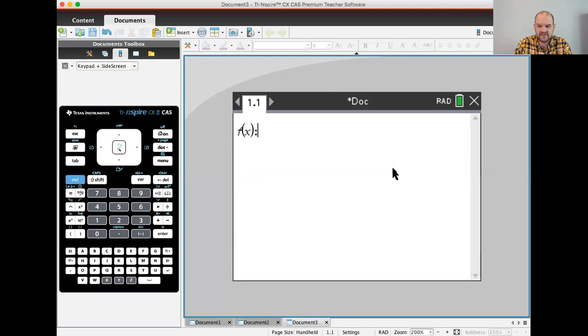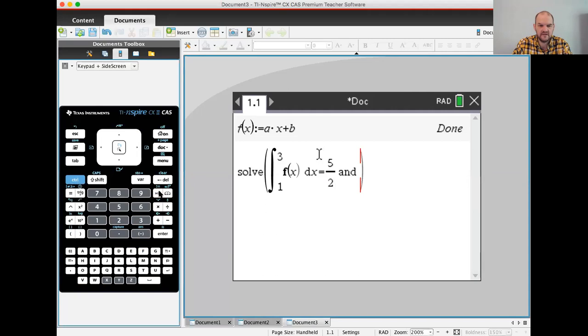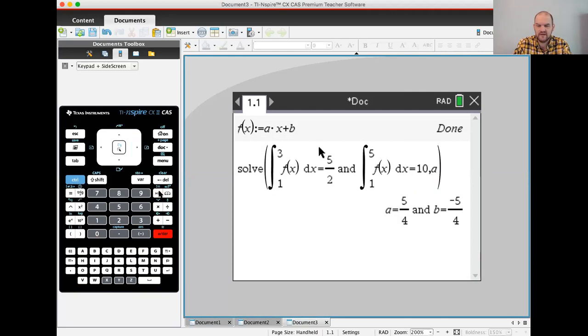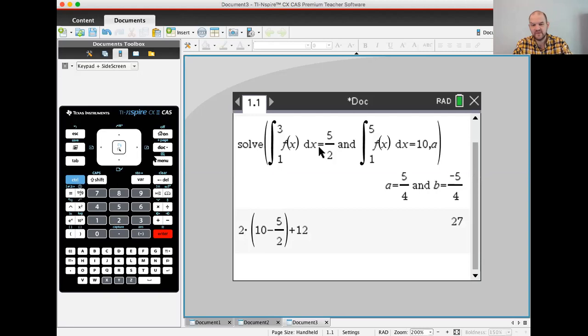I'm going to start a new document. So I'm going to say f of x is a times x plus b. Multiplication not optional there. And then let's see what happens. So the calculator's amazing. It'll just do things. The integral from 1 to 3 f of x dx should be 5 halves. And the integral from 1 to 5 f of x dx should equal 10. So 5 fourths, negative 5 fourths. I don't think there's really anything else that the calculator can help us with. I could make sure that two times 10 minus five halves plus 12 is what I think it is. It's 27. Okay.